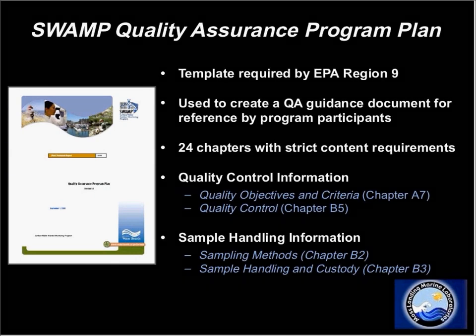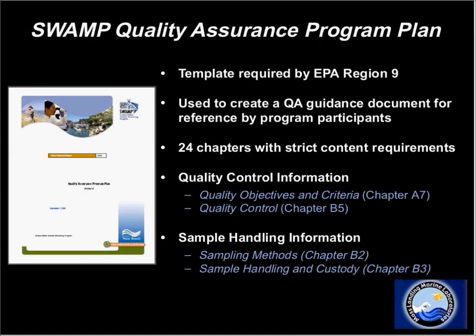That all ties into the SWAMP QA program plan. A QA program plan is a document template that was developed by EPA Region 9. The idea is that programs will adopt this template and create a comprehensive QA guidance document. Program participants can then reference that comprehensive document when they have questions regarding QA or QC policies.